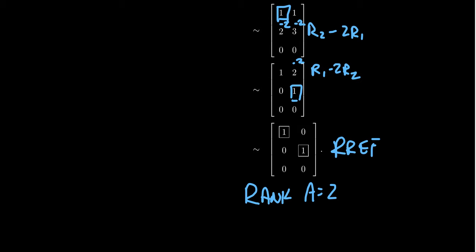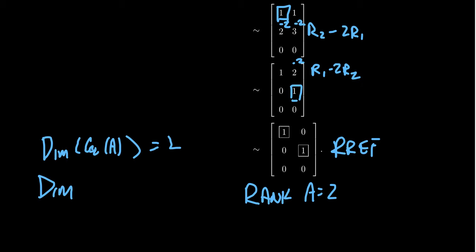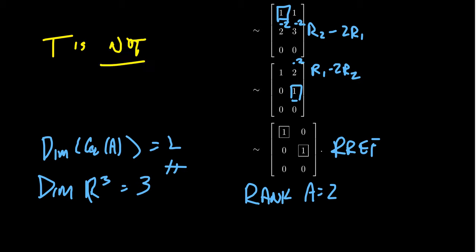The rank of a matrix is the dimension of the column space, so the dimension of the column space of A equals 2. On the other hand, the target space was R³, which has dimension 3. There's a disconnect: the image of this transformation is not R³. Therefore, T is not onto, because its rank was strictly less than the dimension of the target space, which in this case was 3.